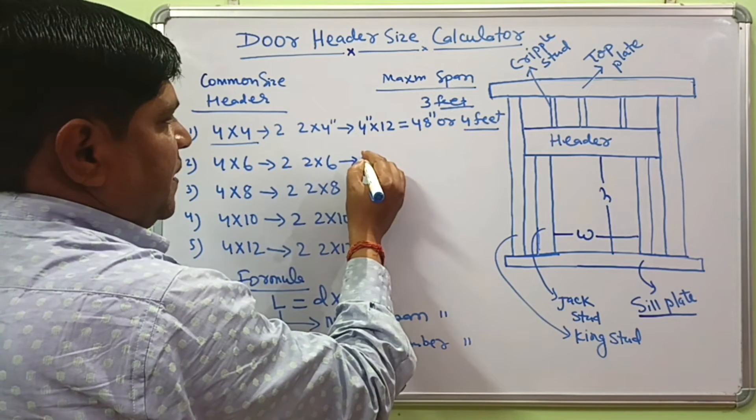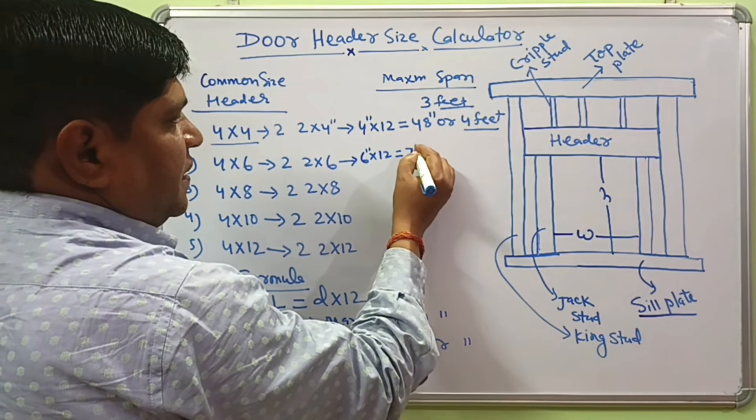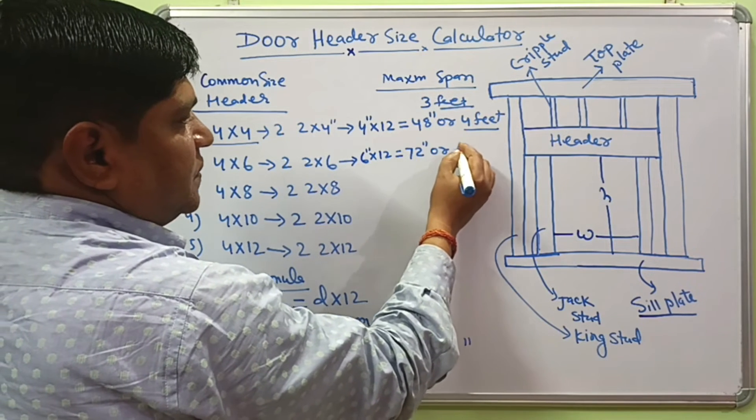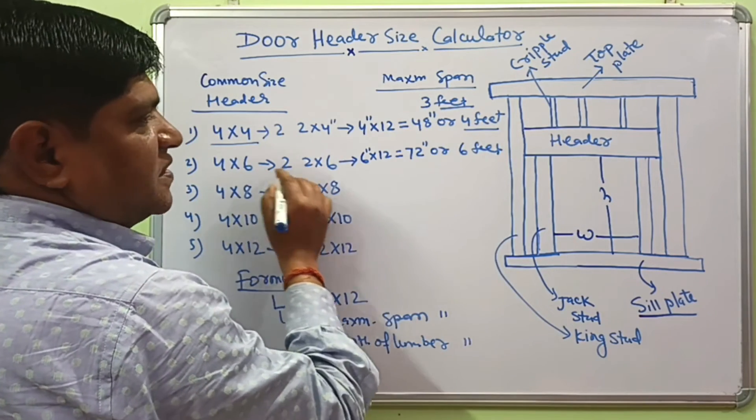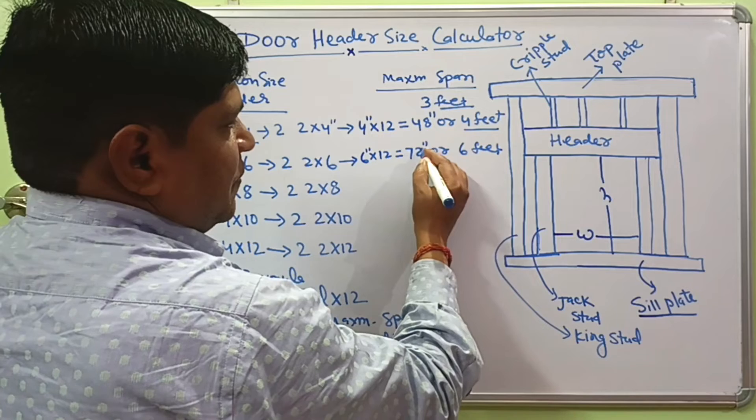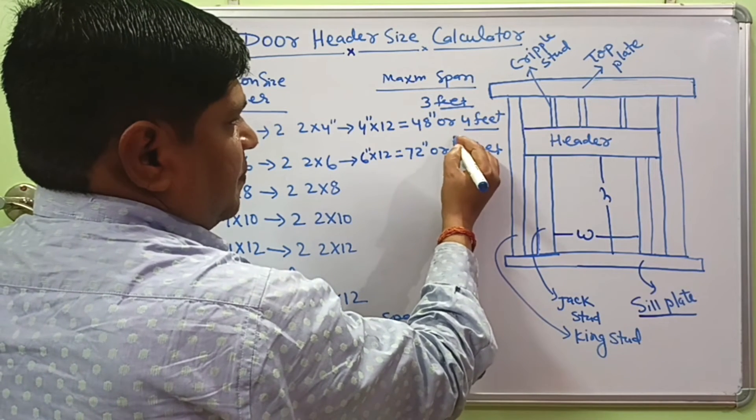To determine this span, 6 inches times 12. This will come 72 inches or 6 feet. It means 4 by 6 header size can span 72 inches or 6 feet, or either less, maybe 5 feet.